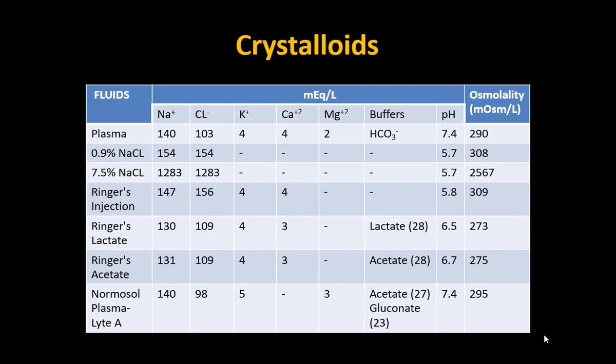Ringer's Acetate, also available as Sterofundin, has a sodium concentration near plasma at 131 and chloride at 109. Potassium and calcium are the same as Ringer's Lactate. It contains acetate at 28 mEq/L. The pH is 6.7 and it is also iso-osmolar. These are balanced crystalloids, available as Plasma-Lyte and Kabi-Lyte.